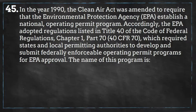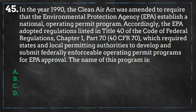In the year 1990, the Clean Air Act was amended to require that the Environmental Protection Agency establish a national operating permit program. Accordingly, the EPA adopted regulations listed in Title 40 of the Code of Federal Regulations, Chapter 1, Part 70, which required states and local permitting authorities to develop and submit federally enforceable operating permit programs for EPA approval.